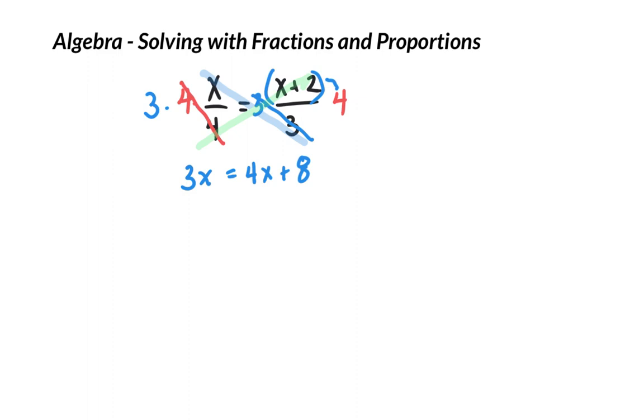So, then we'll get the x's together like always. I'm going to get them on the left like I typically do in order to have that be 0. 3x minus 4x is negative 1x equals 8. Divide both sides by negative 1 in order to get x by itself. So, x is equal to negative 8.